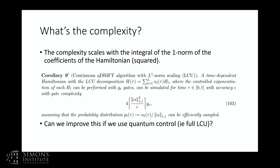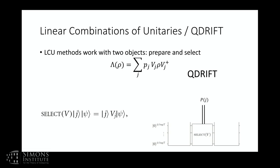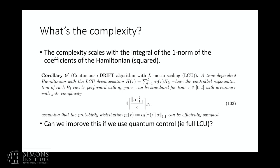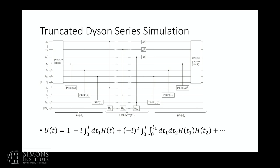The question is: what advantages do we get if we go back and replace the classical control of Q-Drift with quantum control — i.e., use the full LCU approach? Going through the construction, we use a truncated Dyson series expansion — the Dyson series but with fewer terms.